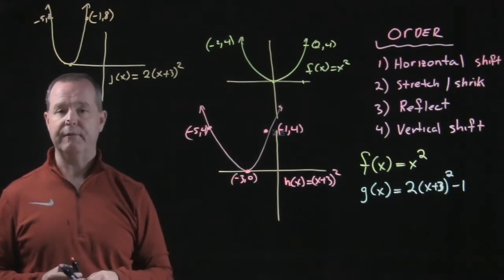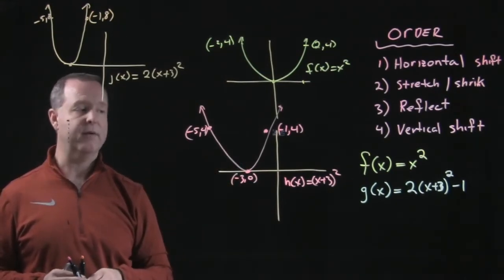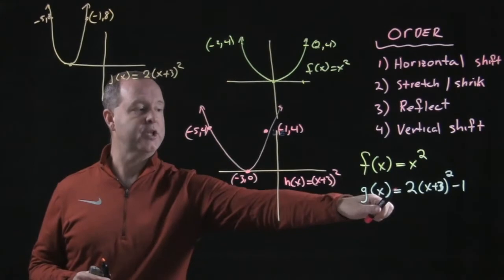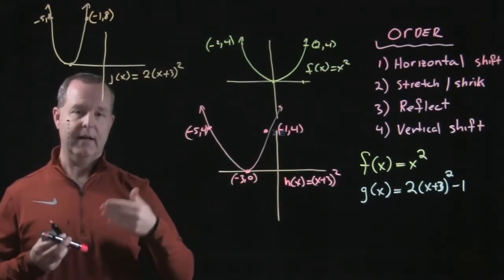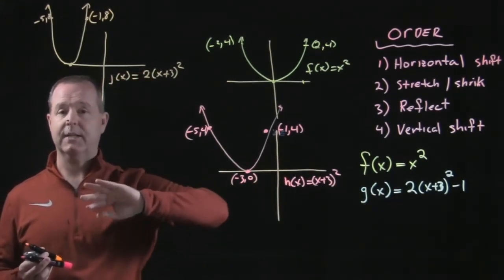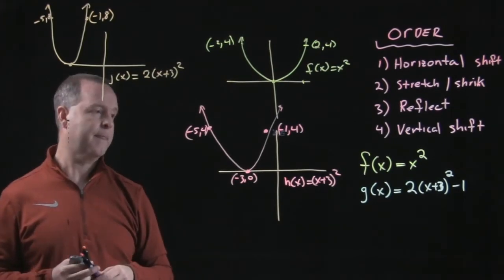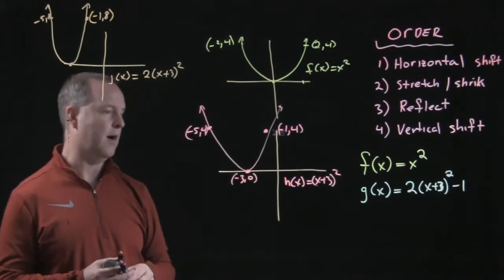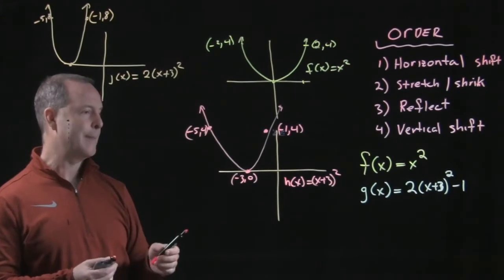Next is our reflection. In this problem, there is no reflection. There's no negative or change in sign outside of the function that causes me to reflect it about the x-axis or the y-axis. So there's no reflection going on.